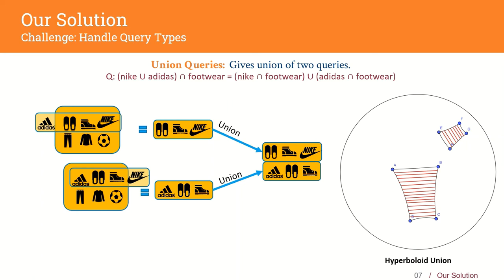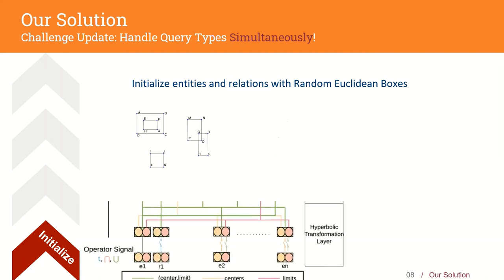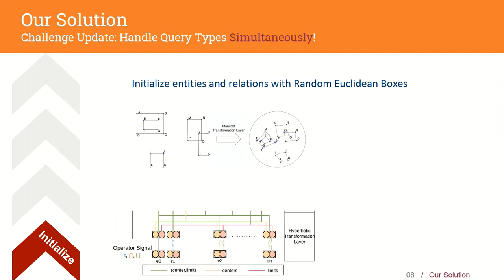Now let's look at representation learning from the queries. Different logical operations have different inputs and processing rules. We could use independent architectures to process each query type. However, this increases redundancy, as we would need to learn different representations for each task and also figure out a way of integrating them. Thus, we add an operator signal that changes the network architecture according to the operation being handled. We start our model with random Euclidean boxes for all entities and relations, which we transform to the Poincaré ball space. Additionally, there is also an input operator signal that defines the network structure for that iteration.